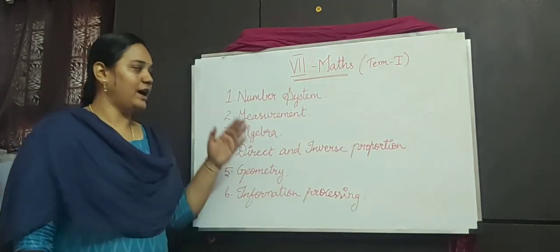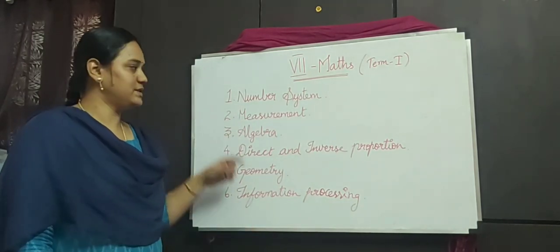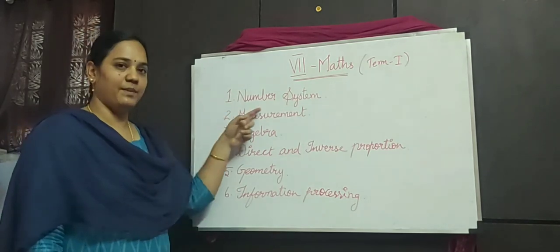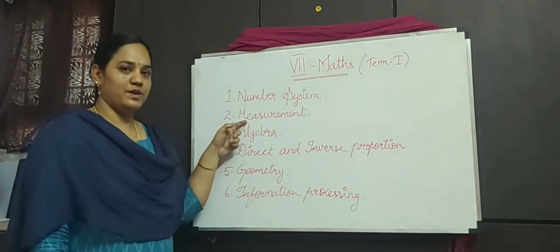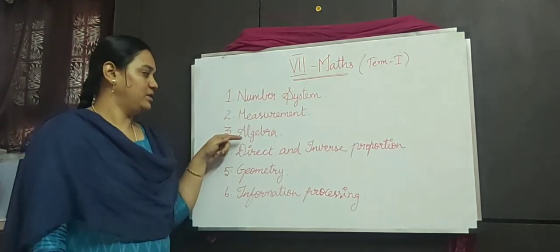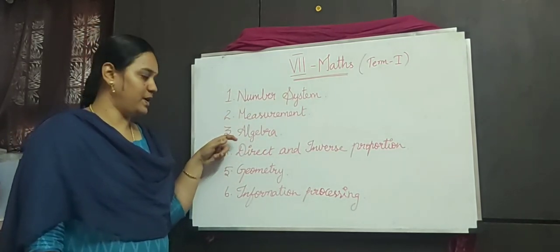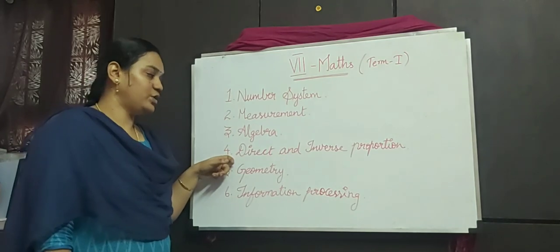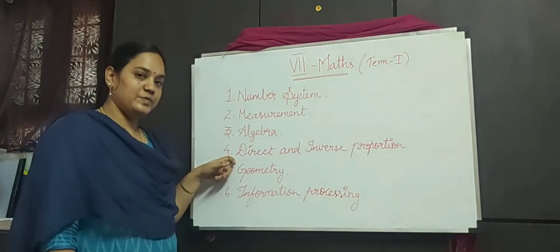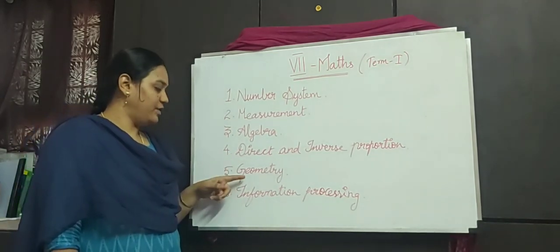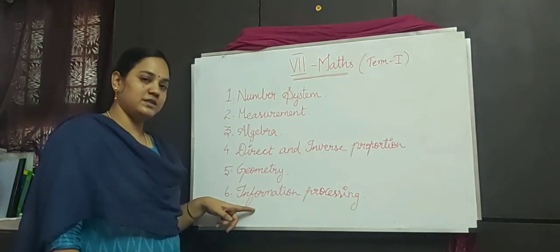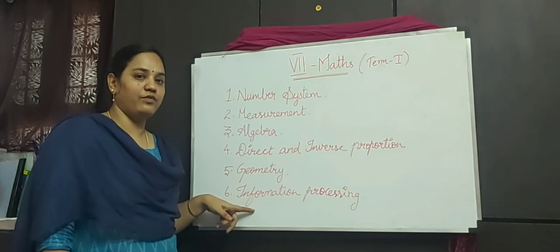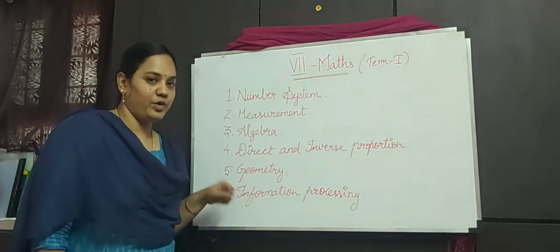Totally we have 6 chapters. The 1st chapter is number system, 2nd chapter is measurement, 3rd one is algebra, 4th one is direct and inverse proportion, 5th one is geometry, and the 6th chapter is information processing.